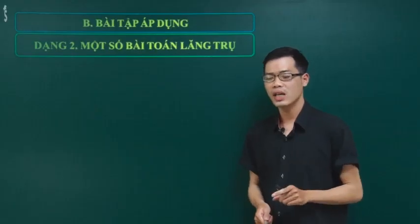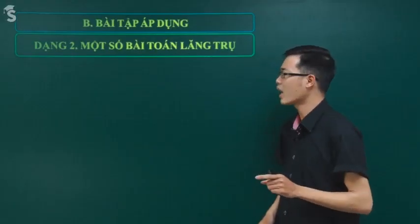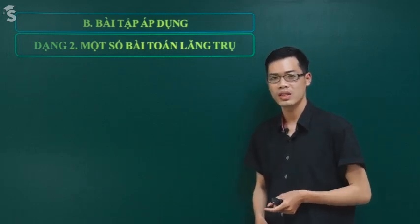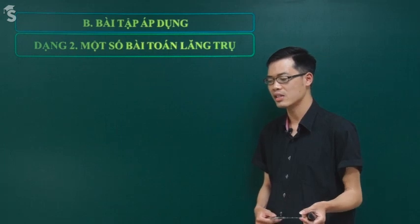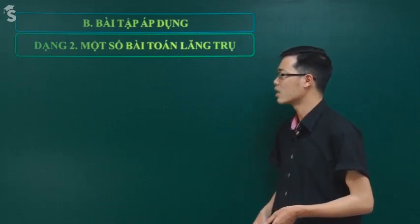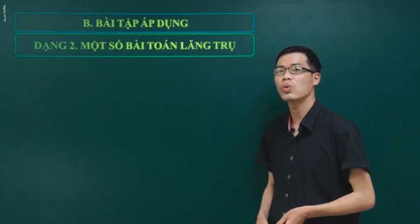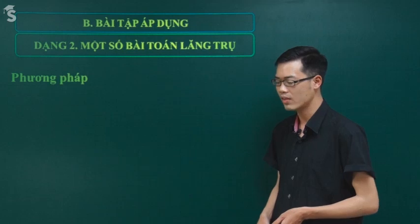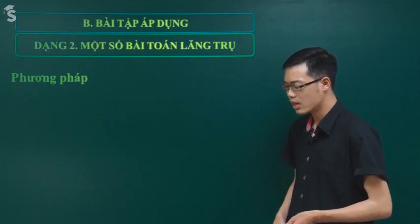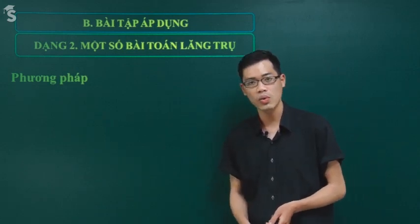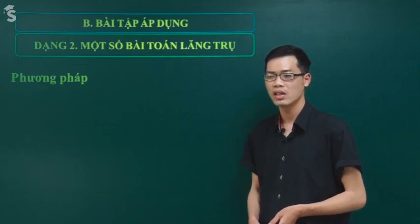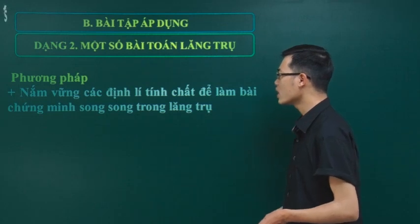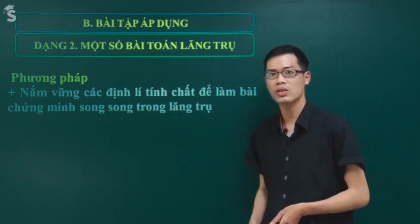Các bạn và Kem sẽ cùng ghi tiếp cho thầy dạng 2 - một số bài toán về lăng trụ. Tiếp nối của phần trước đó, trong tiết 1 chúng ta đã làm các bài về chứng minh hai mặt phẳng song song. Thì chúng ta sẽ tiếp tục đến với lăng trụ. Việc chứng minh các quan hệ song song trong lăng trụ thì hoàn toàn tương tự như trong các hình đã học. Các em cố gắng nắm vững các định lý và tính chất để chứng minh song song trong lăng trụ.